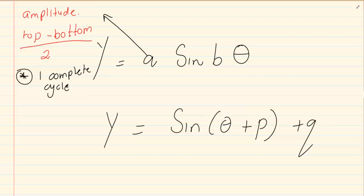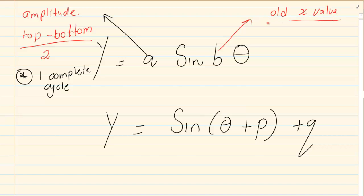You must remember that this has to be one complete cycle. So you have to look at what they give you — are they giving you a complete graph or half a graph? If they're giving you half a graph, you have to draw the rest to determine the complete cycle. For B, you're going to take any point you usually know — the old x value — divided by the new x value.